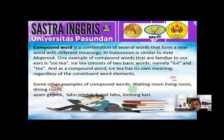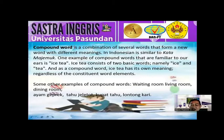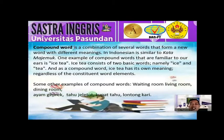'Waiting room' is a place — the place for people to sit and wait, for example for a train or flight departure schedule. There is also 'living room' — not a room that is being lived in literally, but a family sitting room. It consists of the verb 'living' and noun 'room.' Most compound words are noun plus noun. There is also 'dining room.'